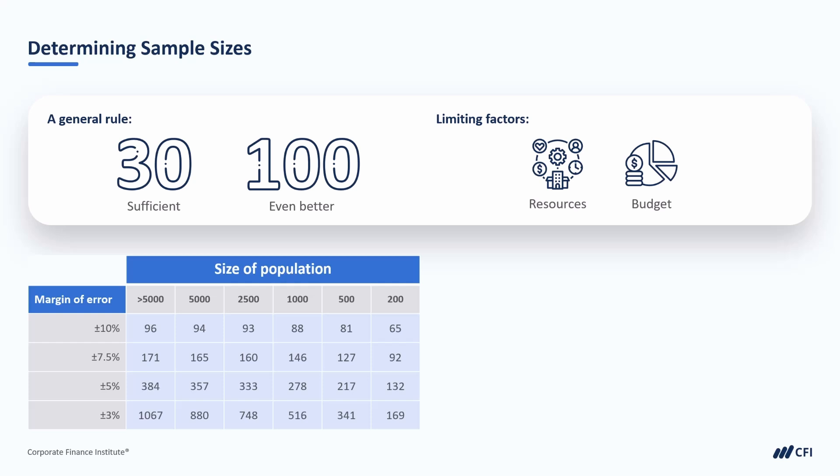These general rules and tables are a good place to start. Just keep in mind that there are factors that might drive the need for larger samples. One such factor, as we discussed earlier, is the confidence level. If we are aiming for a higher confidence level, like 99% or even 99.9%, then we require a larger sample size.